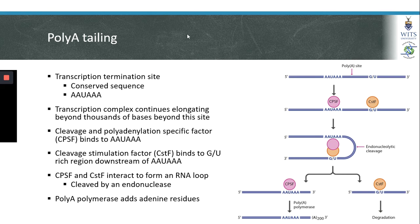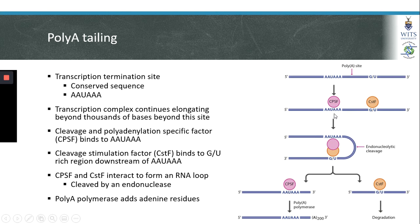The transcription termination site is an AUAA sequence formed close to the end of the mRNA sequence. The RNA polymerase will continue transcribing RNA beyond the AUAA site until it encounters a GU-rich region. The CPSF protein — cleavage and polyadenylation specific factor — can bind to the AUAA site, while the cleavage stimulation factor CSTF is able to bind to the GU-rich region. It is these two factors that are involved in cleaving the RNA molecule and promoting formation of a poly-A tail.